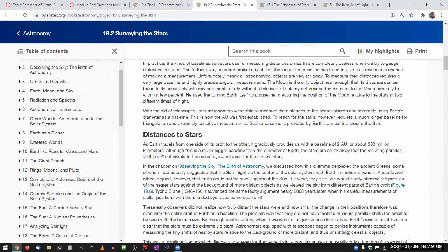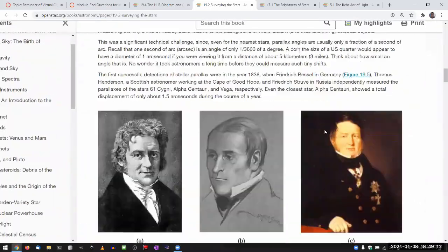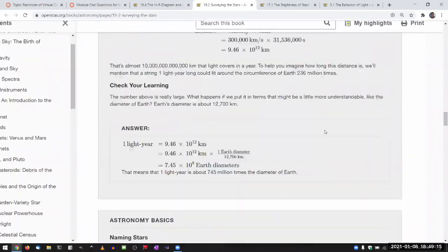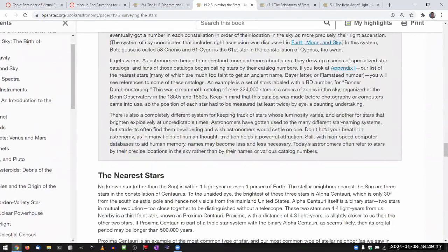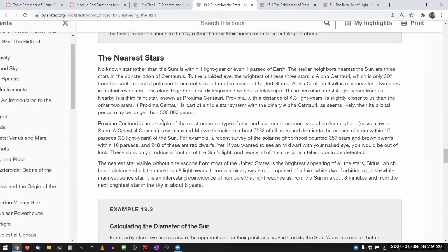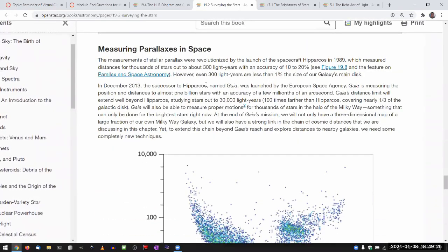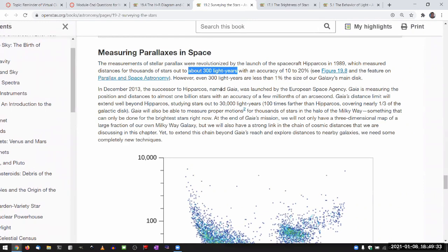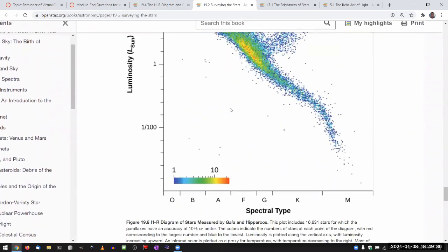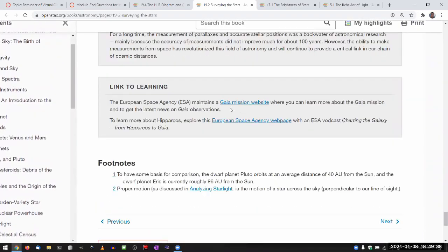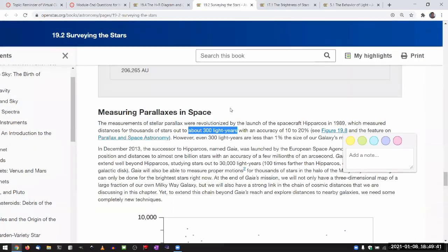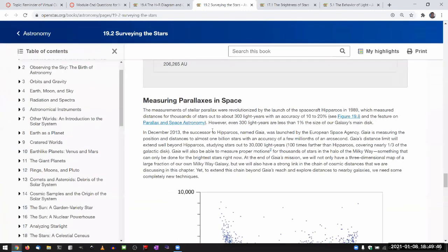So, one thing it should talk about is how this method is limited to measuring nearby stars. The nearest stars, measuring parallax in space. And somewhere here it should talk about the difficulty that comes up with objects that are far away.